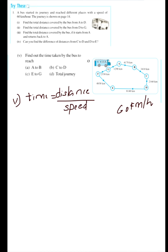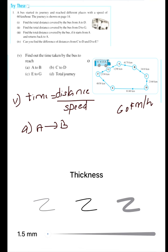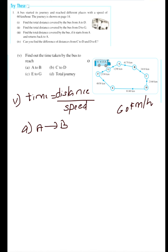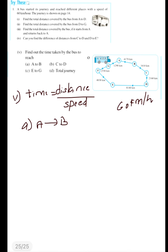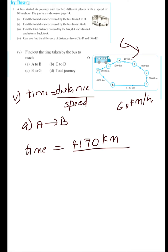In question 5a, you have to find the time taken by the bus to reach from A to B. Speed is 60 km per hour. From A to B the distance is 4170 km. So time equals 4170 km divided by 60 km per hour.